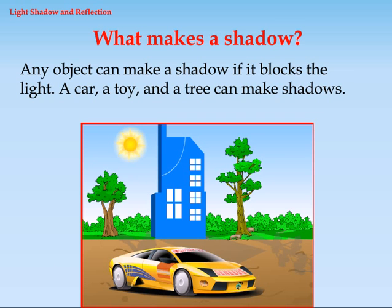What makes a shadow? Any object can make a shadow if it blocks the light. A car, a toy, and a tree can make a shadow.